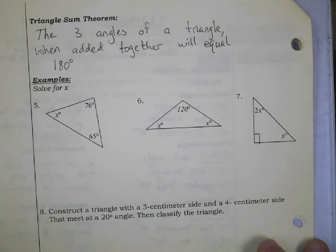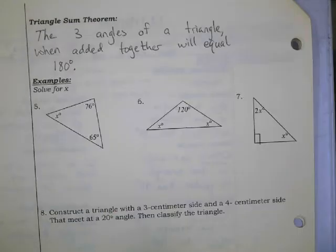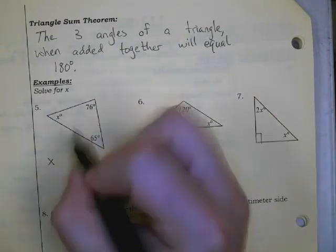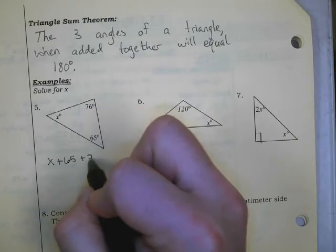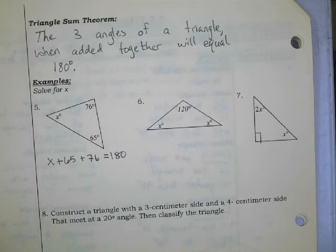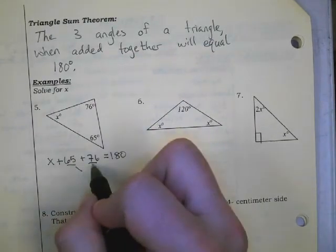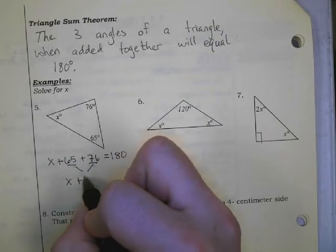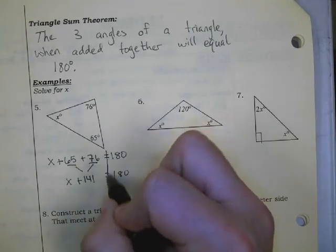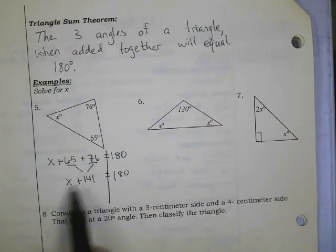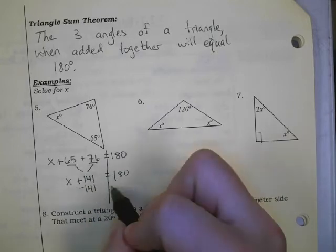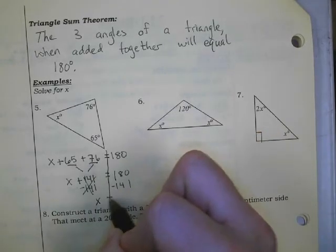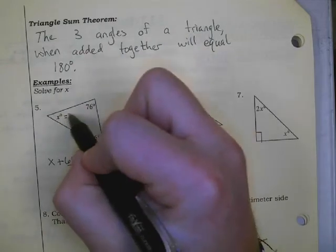We want to apply this algebraically. The way we do that is to add all three angles together and set them equal to 180. So we write x plus 65 plus 76 equals 180. Combining like terms gives us x plus 141 equals 180. To solve for x, we subtract 141 from both sides and get x equals 39 degrees.